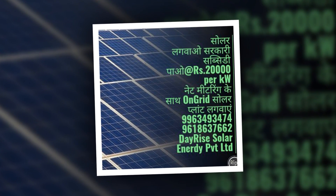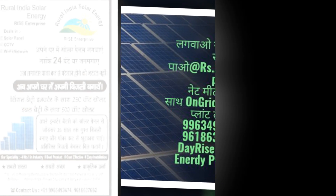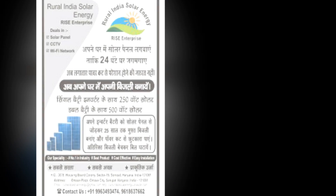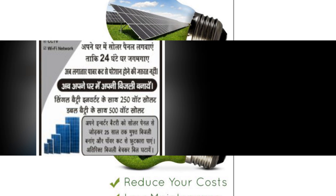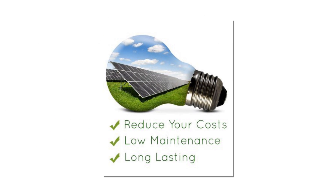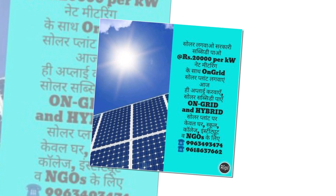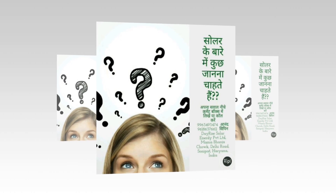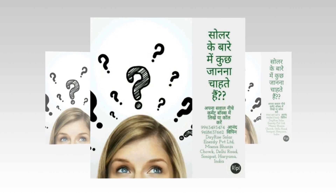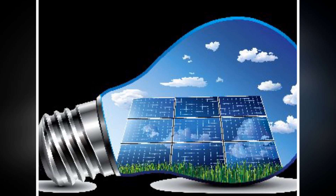Step 1: Assessment of load and estimated size of solar panels to be installed. In some states, to be eligible for subsidies, your home would require to be assessed for electricity load, and a recce of the rooftop to have an energy audit carried out before installation of solar panels on your roof. This can be undertaken by a solar energy developer company like Dayrise Solar Energy Private Ltd in Sonipat, Haryana, India.